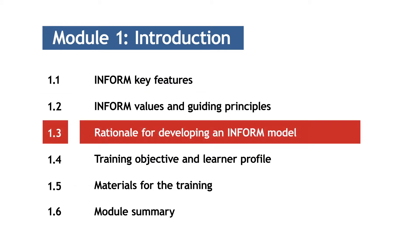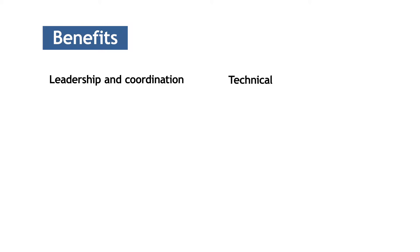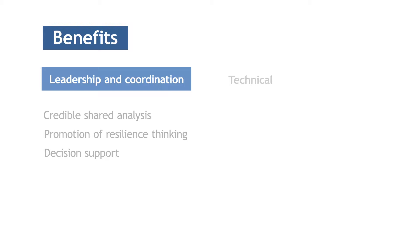Now let's talk about the rationale for developing an INFORM model. Subnational INFORM models offer many benefits to leadership and coordination systems, as well as specific technical advantages. The first main reason is to develop a credible, shared analysis. The interagency or brand-neutral INFORM methodology brings together a wide cross-section of societal actors to identify challenges and map risk through collaboration, data exchange, and joint action — uniting government, civil society, aid actors, and academia around a risk-mapping process.